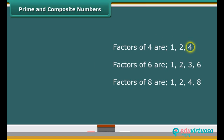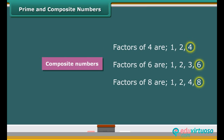Some other numbers like four, six, eight, etc., have more than two factors. Numbers that have more than two factors are called composite numbers. The number one is neither prime nor composite. Two is the smallest prime number and also the only even prime number. All other prime numbers are odd.